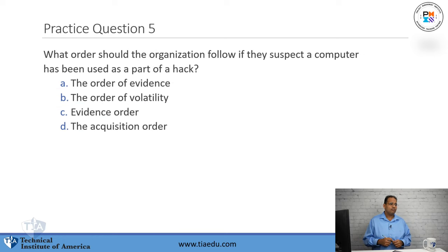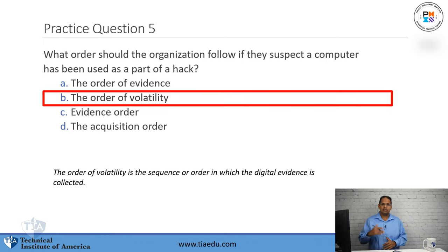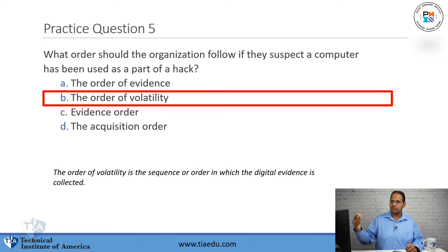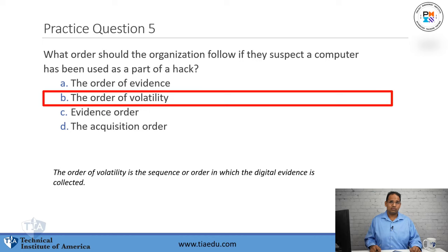Practice question five: What order should the organization follow if the suspected computer has been used as part of a hack? A, the order of evidence. B, the order of volatility. C, evidence order. D, the acquisition order. The answer is the order of volatility — a sequence of how digital evidence can be wiped out. It starts with CPU cache, which is easily overwritten, then other cache files and RAM, then hard drive information. If you don't gather this information quickly, the evidence could be lost forever. Know your order of volatility for your exam and when working in forensics.